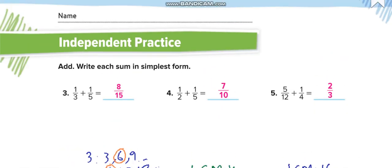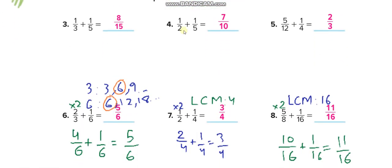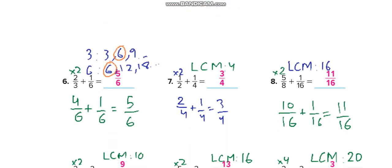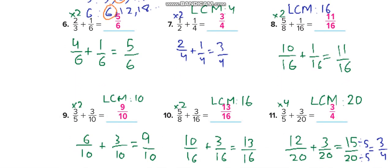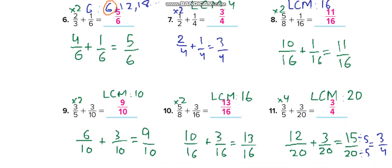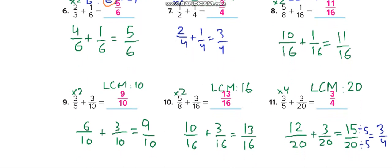In independent practice, you will make the denominators the same by finding the LCM and changing your denominators accordingly. For example, the LCM of 3 and 6 is 6, so you change them into 6 and then add. Solve all these questions in independent practice and then match your answers through this video.